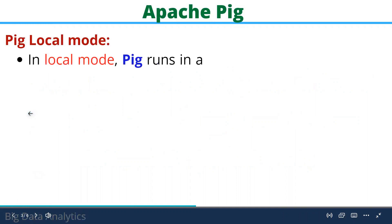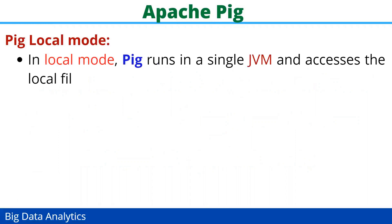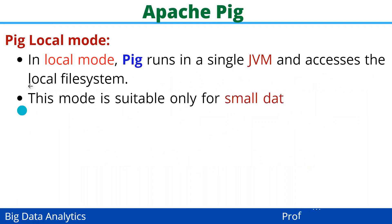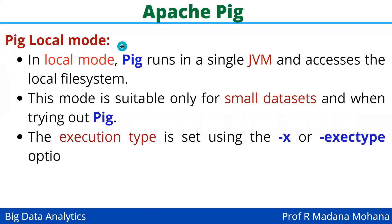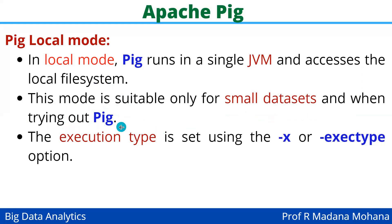Before moving to the practical demonstration, let us see the briefing of the Pig execution environment. We are using Pig local mode execution. Pig consists of three types of execution environments: local mode, MapReduce mode, and embedded mode. In local mode, Pig runs in a single Java Virtual Machine and accesses the local file system. This mode is suitable only for smaller datasets and when trying out Pig technology.